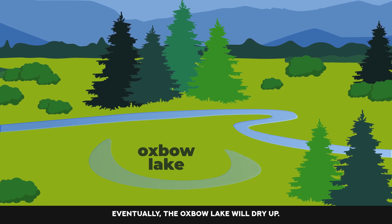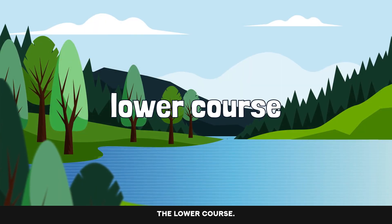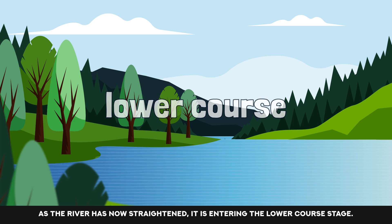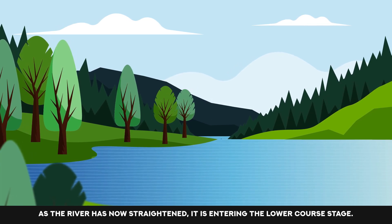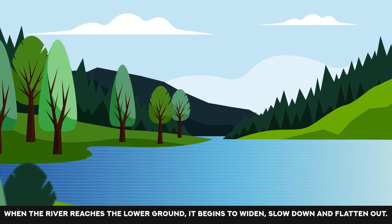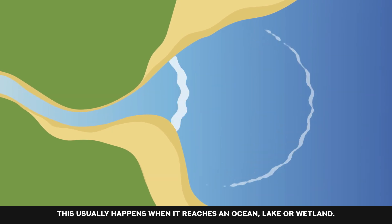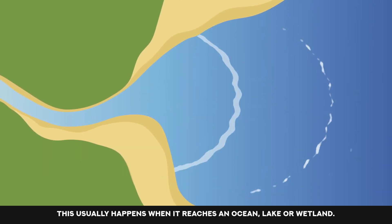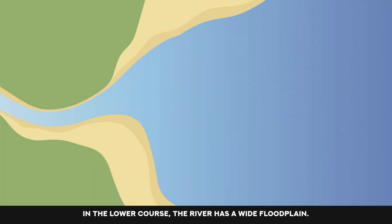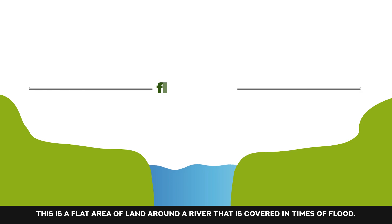Eventually, the oxbow lake will dry up. The lower course. As the river has now straightened, it is entering the lower course stage. When the river reaches the lower ground, it begins to widen, slow down and flatten out. This usually happens when it reaches an ocean, lake or wetland. In the lower course, the river has a wide floodplain.